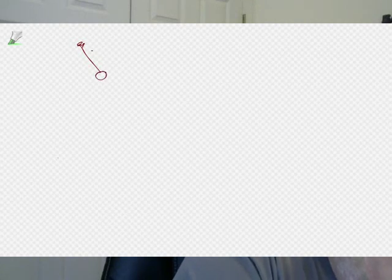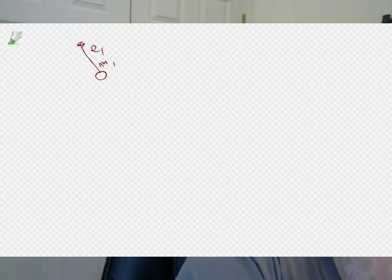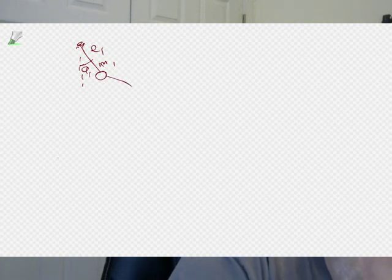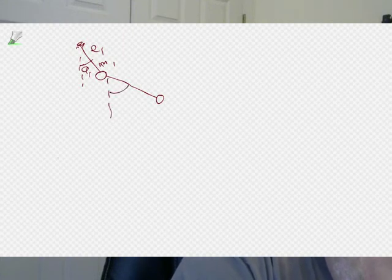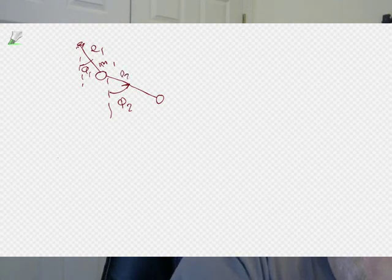We have some pivot point from which hangs the first pendulum. It's got length L1. The bob has mass M1. We will find phi1 as the angle that it makes. Then the second bob hangs below. We will define phi2 as its angle relative to the vertical. This length here is L2, and this mass here is M2.